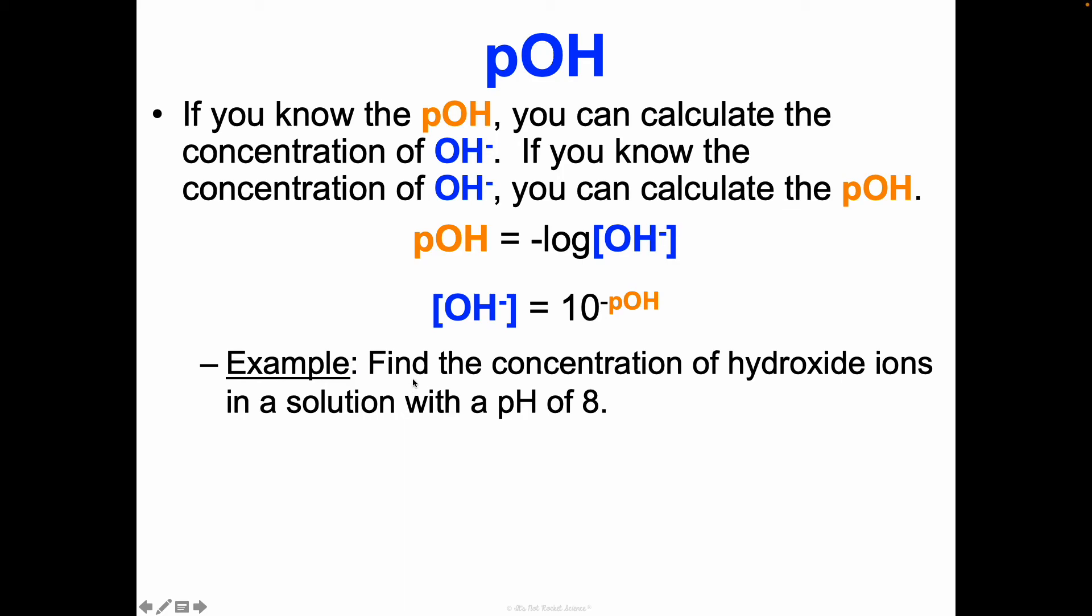Let's say you have a problem here. Find the concentration of hydroxide ions in a solution with a pH of 8. We know a pH of 8. We want to know the hydroxide ion concentration. In order to know the hydroxide ion concentration, we need to know the pOH. Well, we know that pH plus pOH is 14.0, so we can use that. First, pH plus pOH equals 14.0.